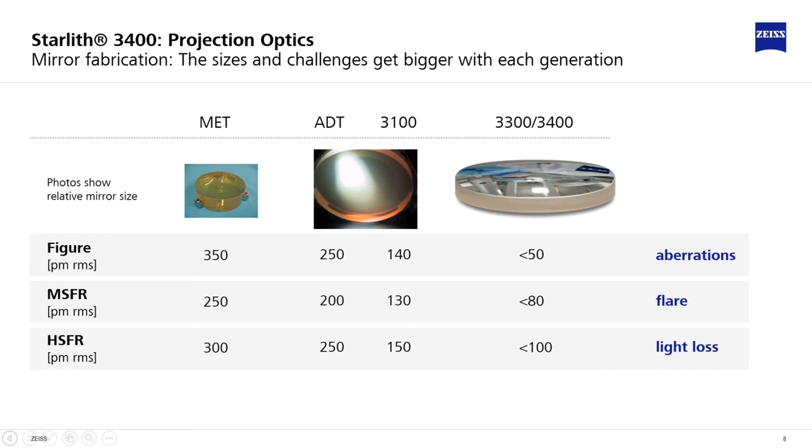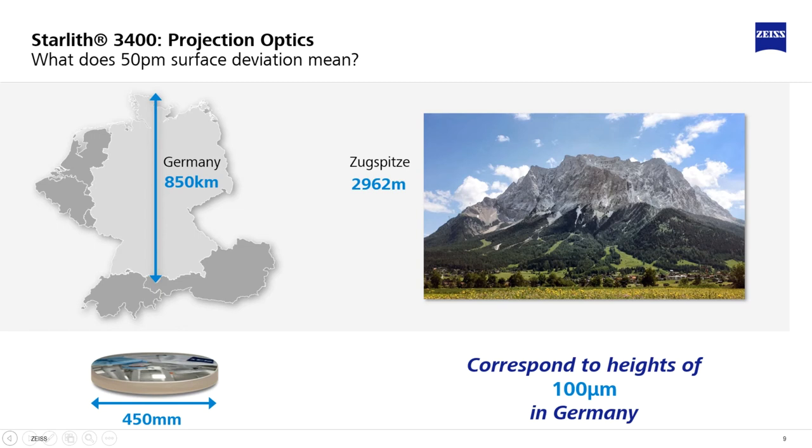The MSFR roughness has improved by a factor of more than 3. In order to keep the OPC effort within reasonable limits, nowadays a flare target of below 4% is required and indeed achieved for 3300 and 3400.